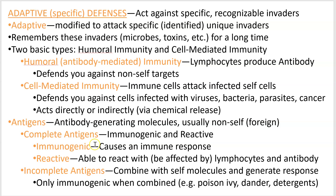To be a complete antigen, it must be immunogenic — generating an immune response — and reactive, meaning lymphocytes and antibodies will act on it. Incomplete antigens are reactive but only immunogenic when combined with a self molecule. For example, if you're allergic to poison ivy, it gets incorporated into some of your own molecules and triggers an immune reaction that way.